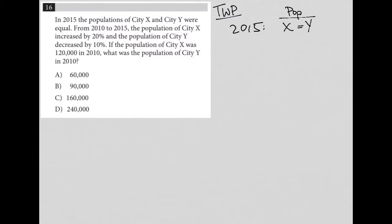The next sentence covers the years 2010 to 2015. The population of city X increased by 20%. So if the population in 2010 was some value, then in 2015 it's going to be 120% of that, which means 1.2 times that value. 120% higher is the same as saying 1.2 times.